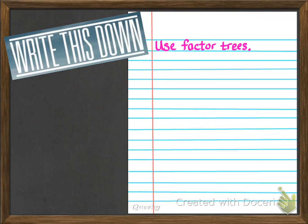Now we're going to finish up our notes. Factor trees branch downward, so if you only have a couple of lines left you might want to turn your page and write on the back — that's okay. Let's go ahead and practice what we just watched.